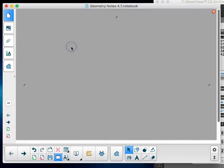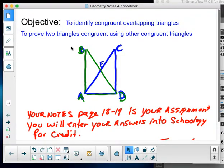Okay, for 4.7, in order to understand what's going on, our objective today is to identify congruent overlapping triangles and to prove two triangles congruent using other congruent triangles.